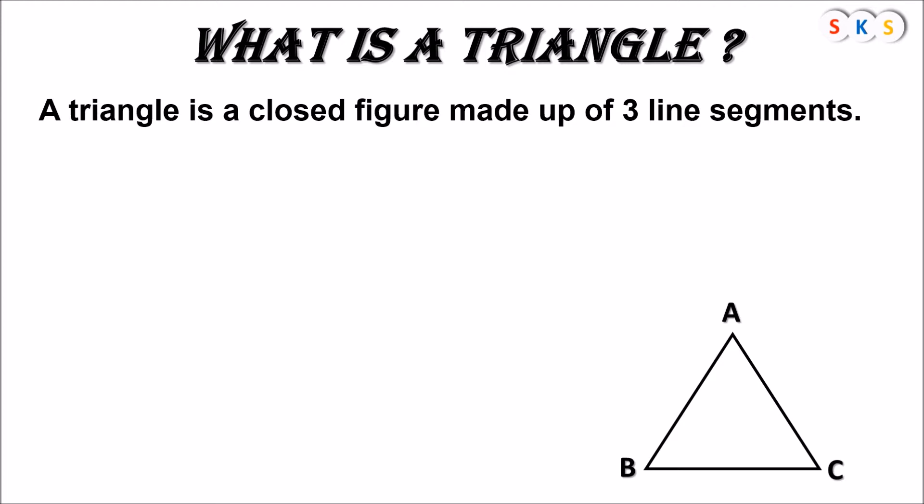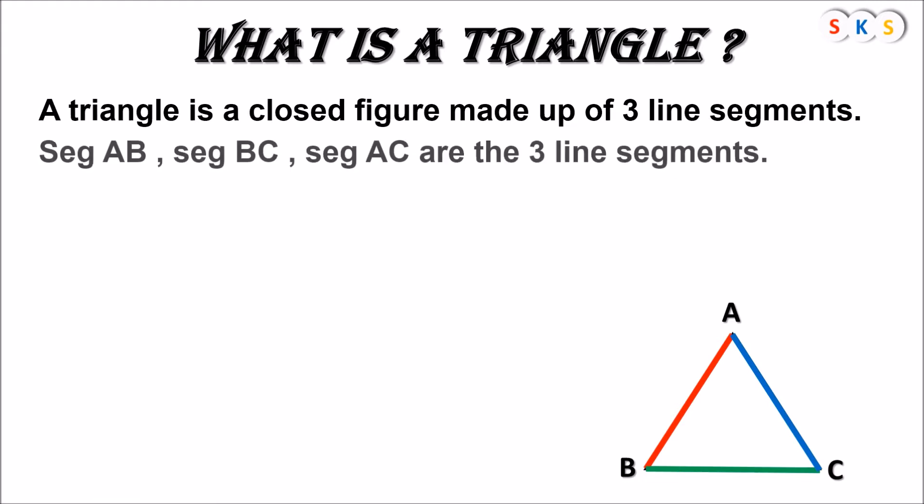Let's see this figure is called as triangle. This figure has three segments: segment AB, segment BC and segment AC. This figure is made up of three segments and its closed figure hence it is called as triangle. So here seg AB, seg BC and seg AC are the three line segments.